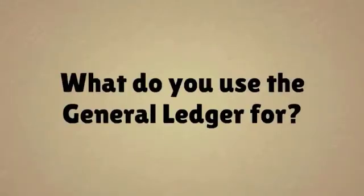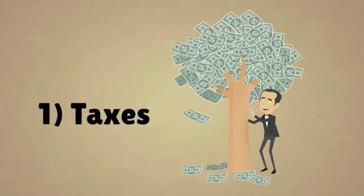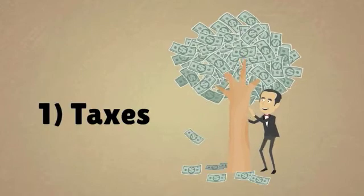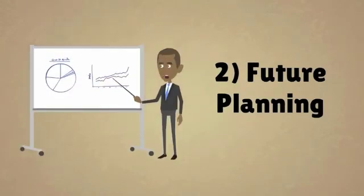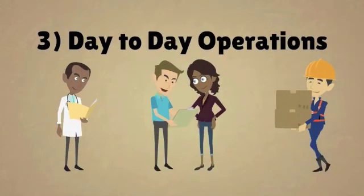What do you use the general ledger for? First of all, taxes. The general ledger shows the tax department the company's overall financial picture, ensuring we pay the right amount of taxes. Second, future planning — the general ledger helps the board of directors see how the company is doing, so they can make future plans based on concrete trends in data. And lastly, day-to-day operations: the general ledger enables senior staff to react quickly to daily business and make immediate decisions.